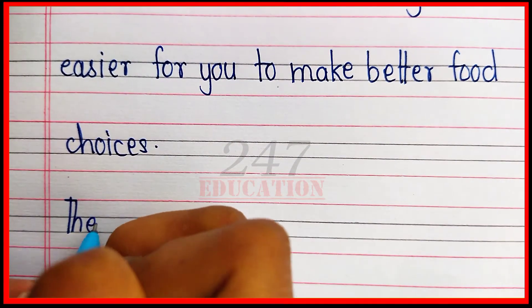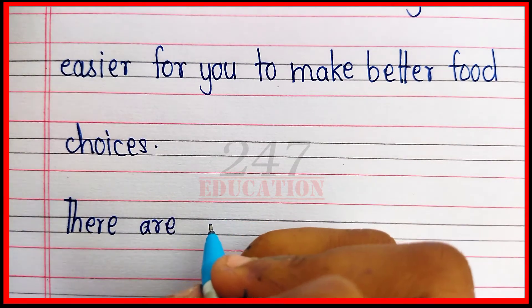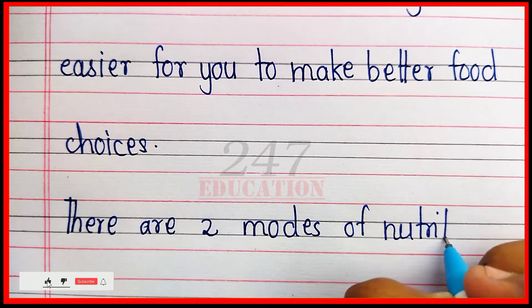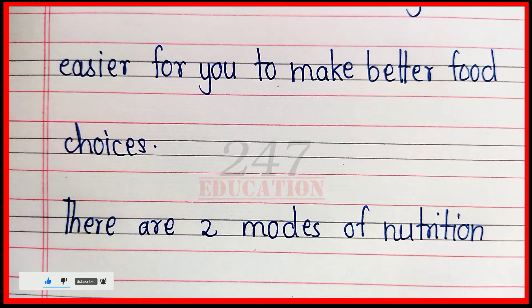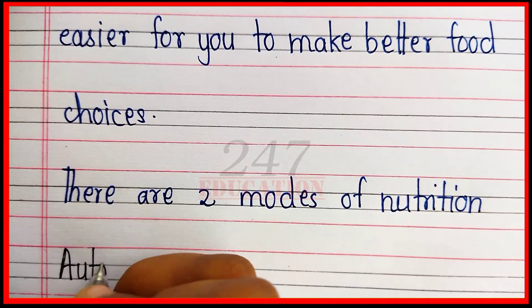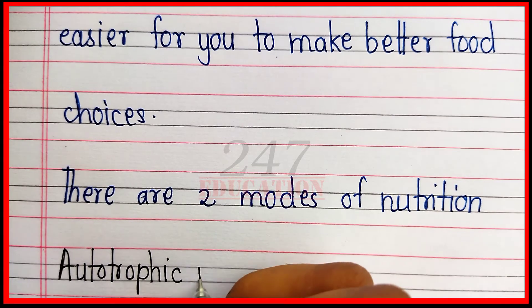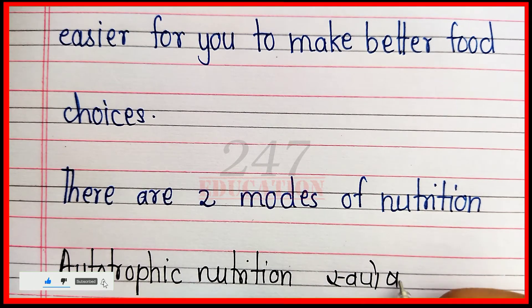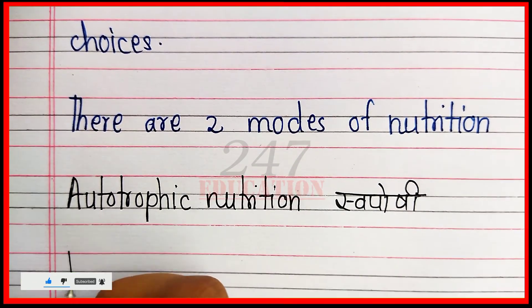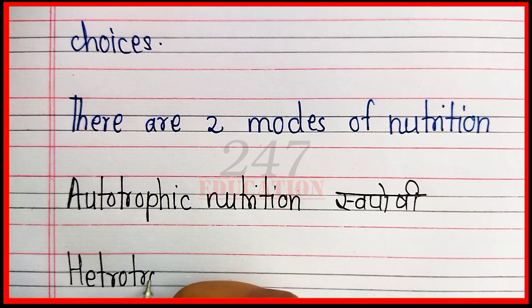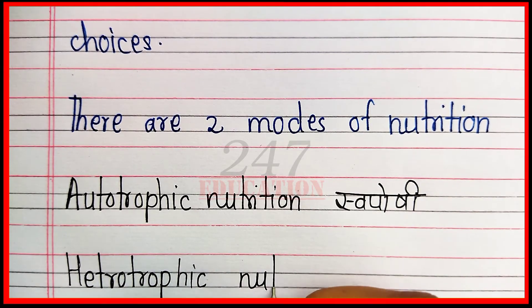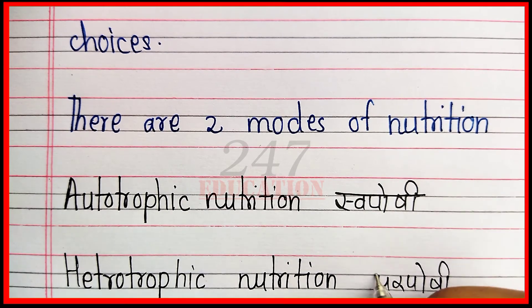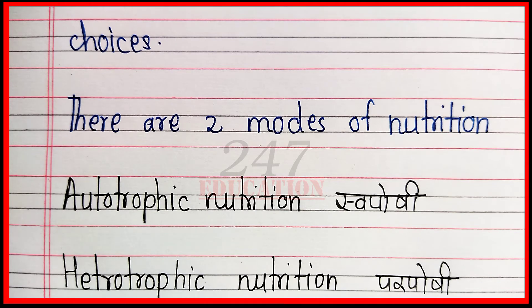There are two modes of nutrition. The first is autotrophic nutrition. This covers nutrition in plants.